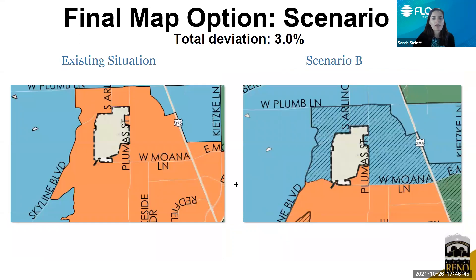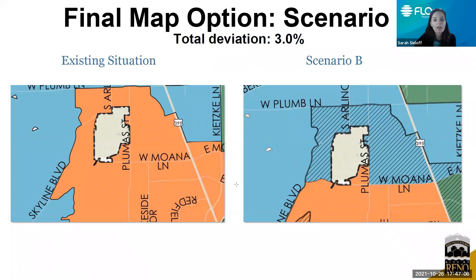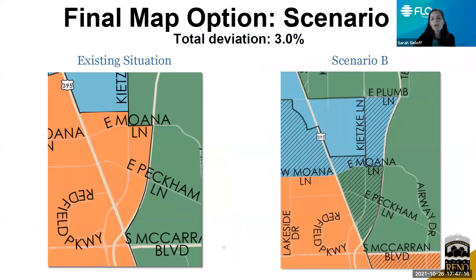Moving to the Virginia Lake area in Scenario B: this option would move a piece of Ward 2 around the Virginia Lake neighborhood to Ward 1, effectively bringing the boundaries of Ward 1 down south, using West Moana Lane and Plumas as guidelines, with Skyline Boulevard to the west as a natural boundary.